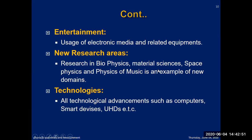New research areas: what are the new research areas? Biophysics, material sciences, space physics, and physics and music are examples of new domains. These are some of the new areas of physics — including nuclear and electronics — where a huge amount of research is going on in the world.